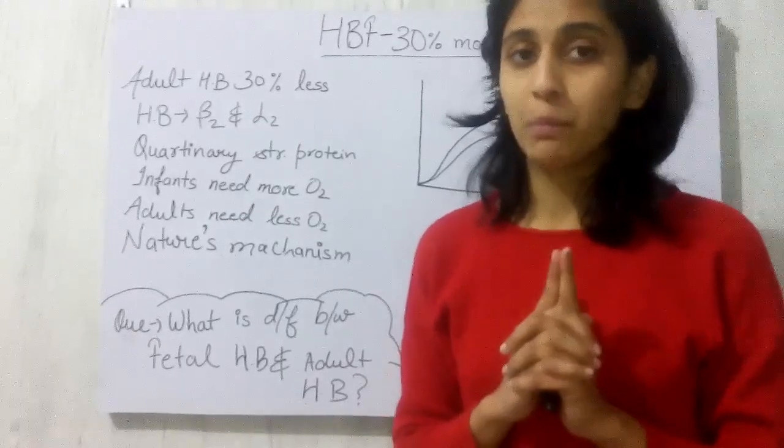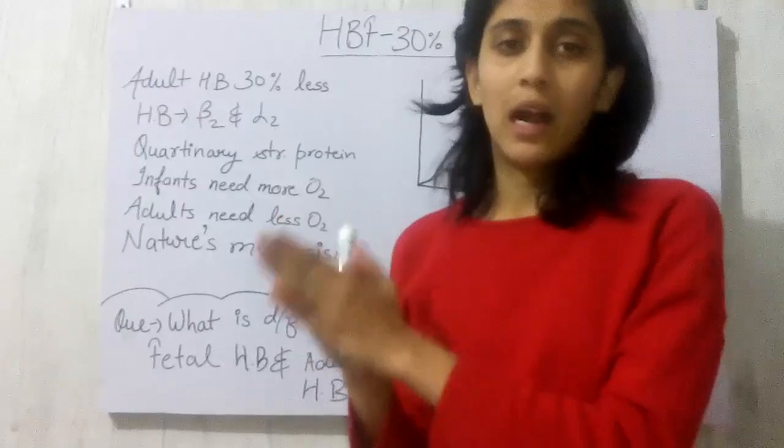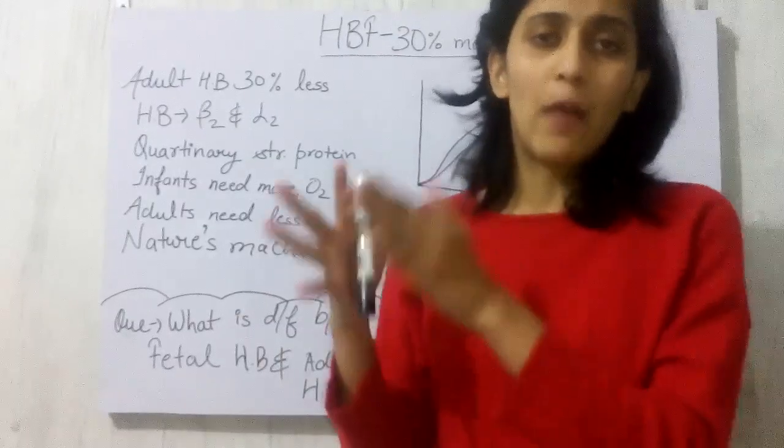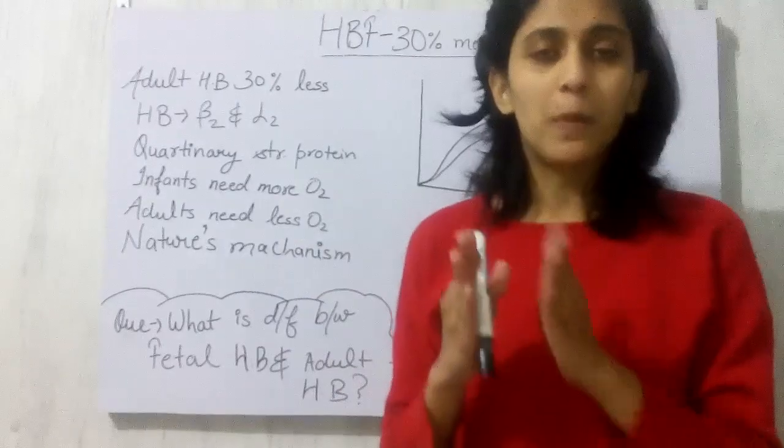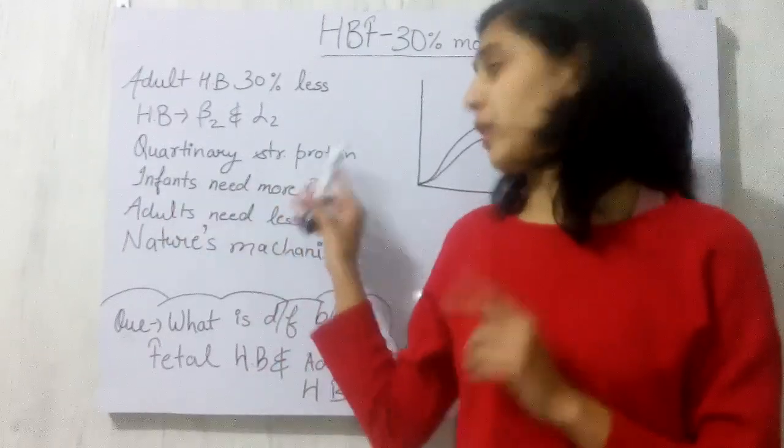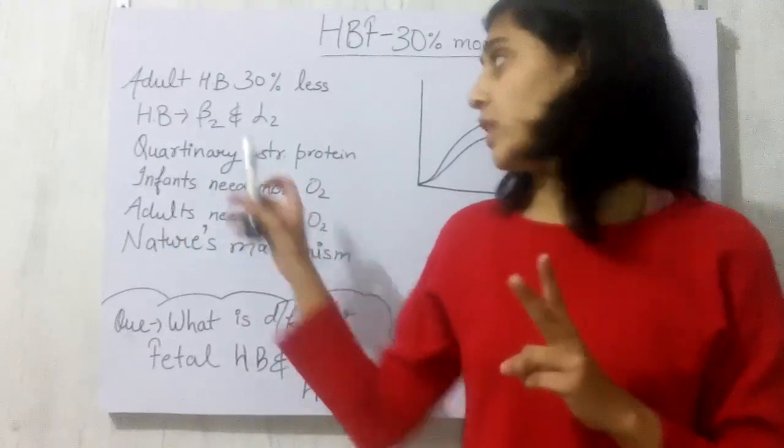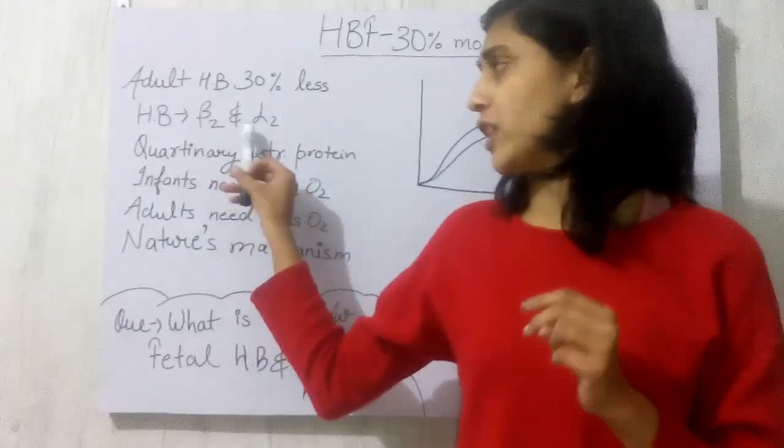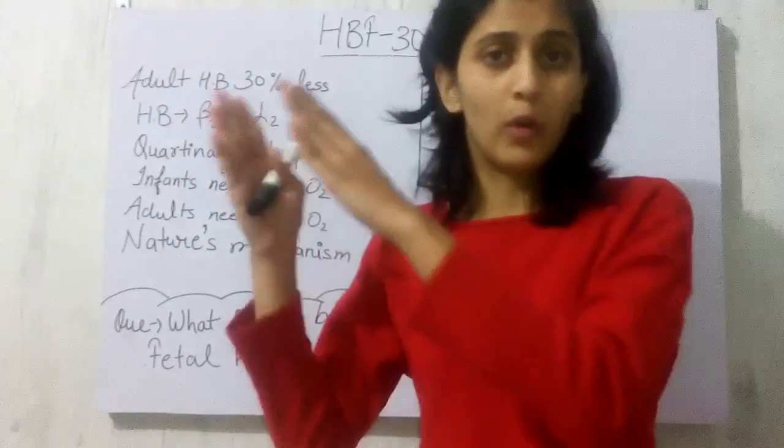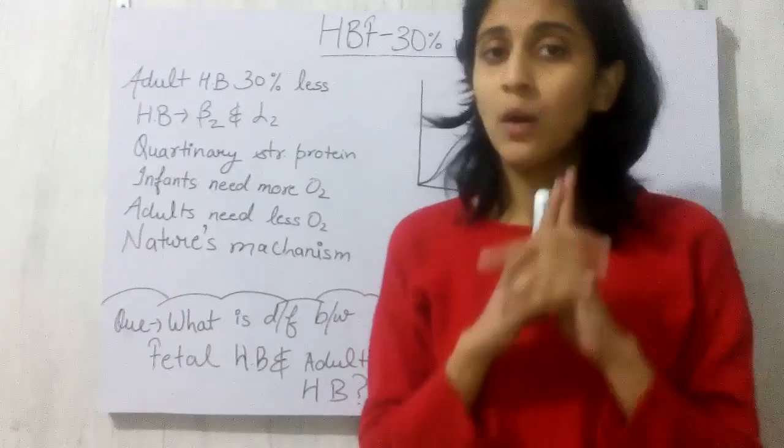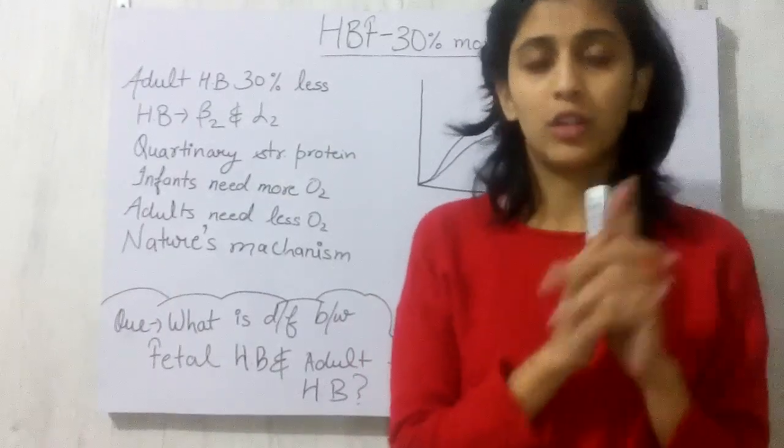But before I tell you the difference between fetal HB and adult HB, I would like to tell you about some basic facts of HB. HB is a quaternary structure of protein. Point number two: HB consists of two beta chains and two alpha chains, and these two points are common for all kinds of HBs, no matter whether this is the HB of an adult or the fetus.